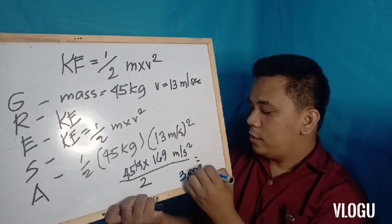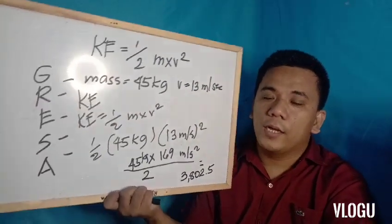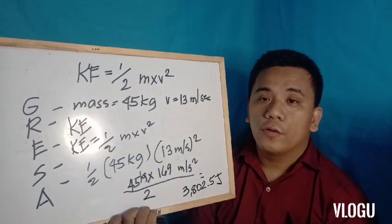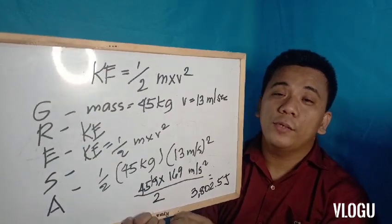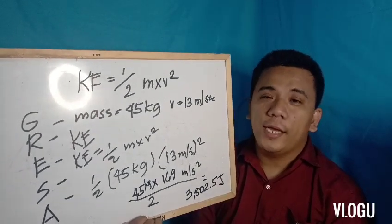The final answer is 3,802.5 Joules. The unit is J, which stands for Joule — named after James Prescott Joule. Now let us discuss how to compute problems related to potential energy, again using the GRESA method.